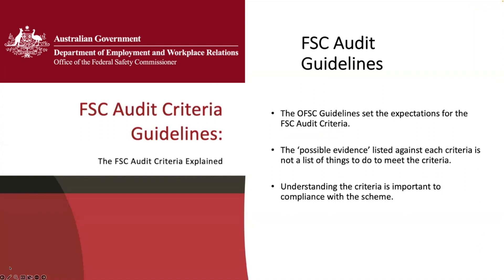A reminder for those not aware: the FSC audit criteria guidelines set the expectations for the criteria. They're set out as the criteria, the scope in real-world terms, and then possible evidence listed against each criteria. The possible evidence isn't a punch list of things to do — it's suggested things you may be able to produce at audit to demonstrate compliance. Understanding the criteria is really important to compliance with the scheme.